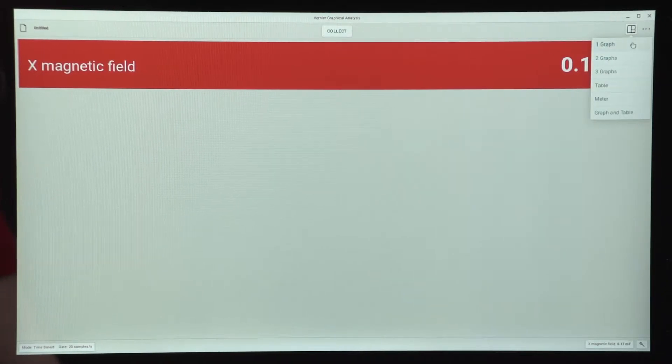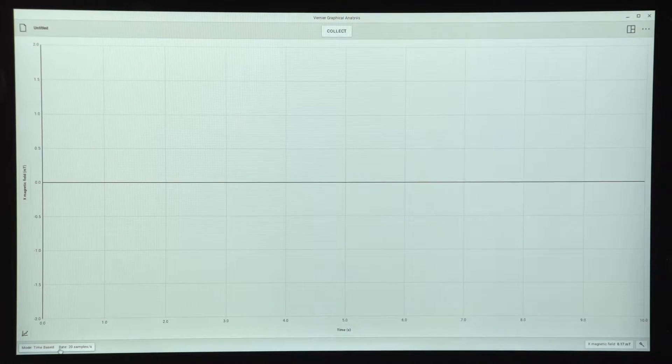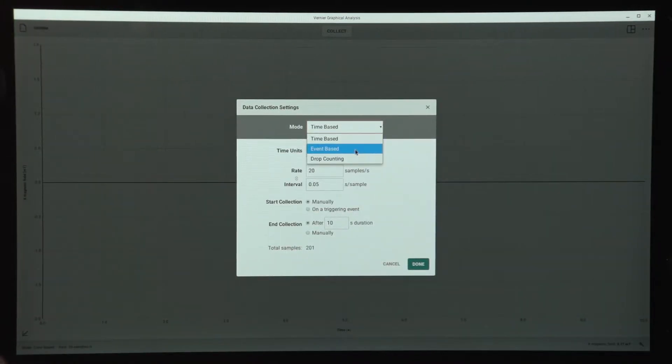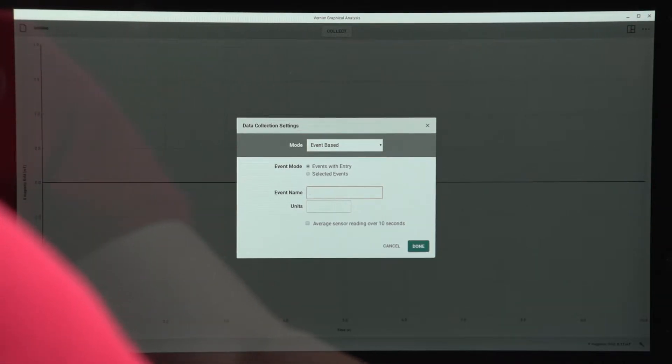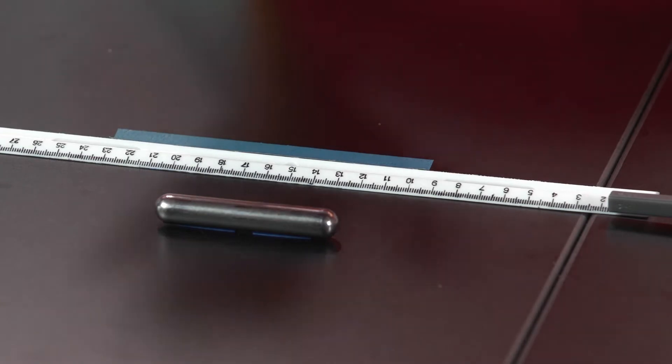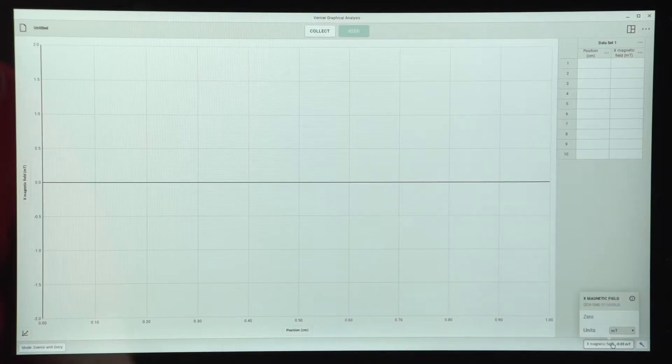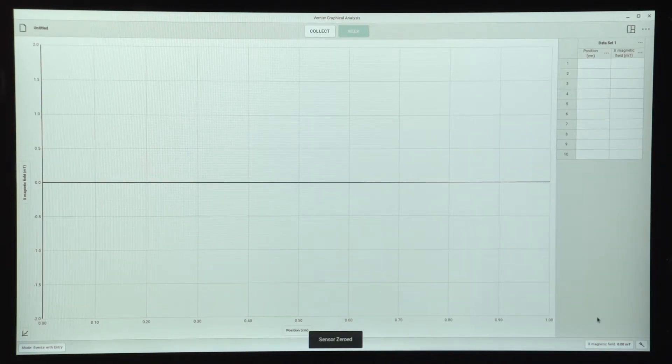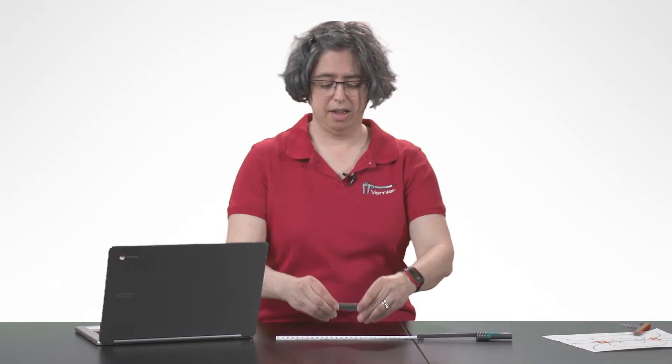So I'm going to go back to the graph screen, one graph. I'm going to change the data collection mode so that I can use events-based events with entry. I'm going to have my event name be position, which I'll measure in centimeters. And then before I actually start taking measurements, I'd like to make sure that I am making my measurements without the influence of magnets other than this one, and also without the influence of the Earth's magnetic field. So I'm actually going to temporarily take away this magnet and then zero the sensor reading. So that's going to eliminate the Earth's magnetic field from the measurements that this magnetic field sensor takes. After I've zeroed it, I can return the magnet to its place, and now I can begin my experiment.